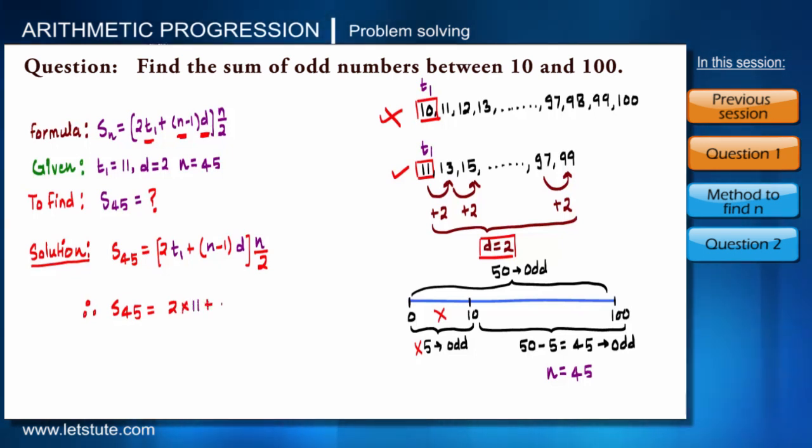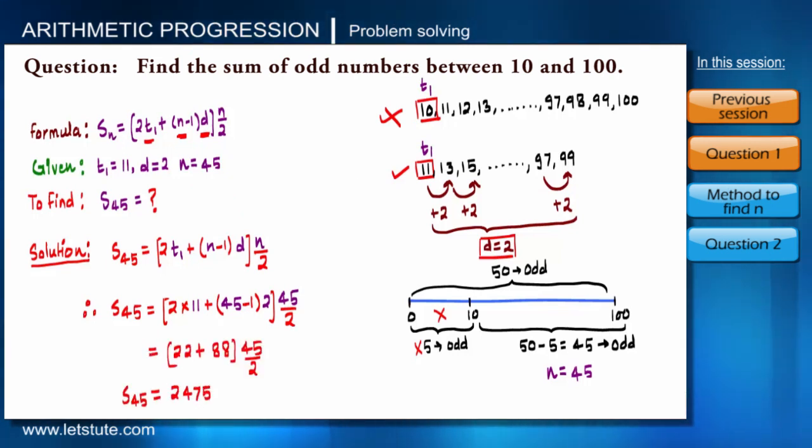And it will give us 2475. That means sum of odd numbers from 10 to 100 is 2475. Friends, in every question we just have to understand which parameter's value is given and what to be found. That is the only trick in such problems.